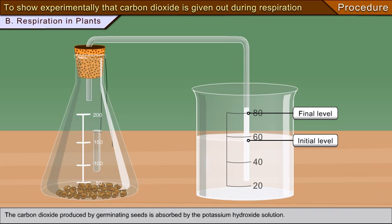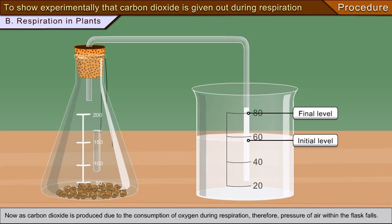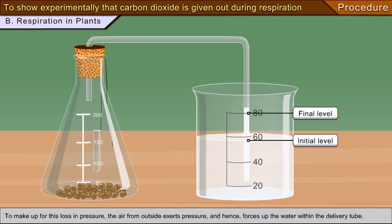The carbon dioxide produced by germinating seeds is absorbed by the potassium hydroxide solution. Now as carbon dioxide is produced due to the consumption of oxygen during respiration, therefore pressure of air within the flask falls. To make up for this loss in pressure, the air from outside exerts pressure and hence forces up the water within the delivery tube.